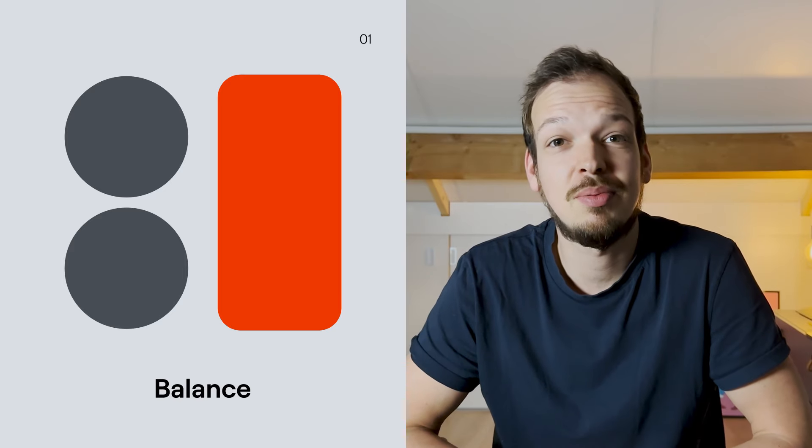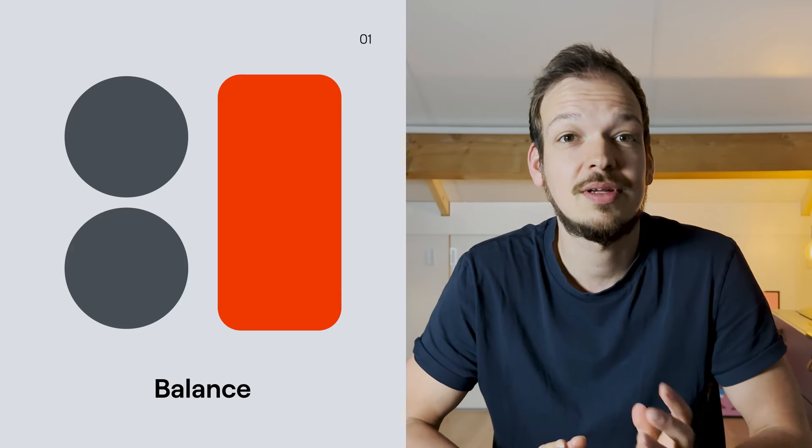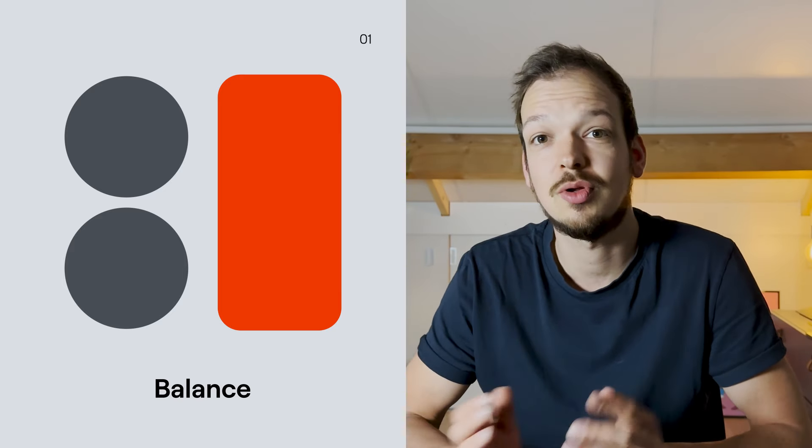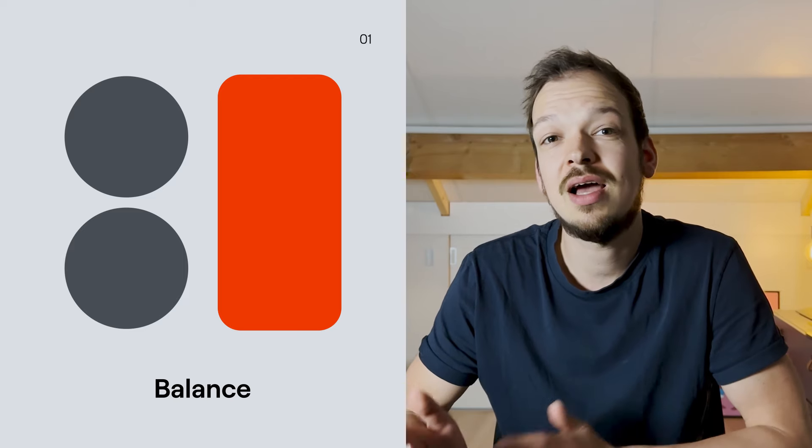The first principle is balance. Balance in design ensures visual harmony by evenly distributing elements, creating stability and equilibrium — much like a well-balanced seesaw. In this example, balance is achieved with two circles on the left counterbalanced by a rectangle on the right, creating a harmonious composition. Note that balance can also be horizontal, diagonal, or arranged top-left or bottom-left.